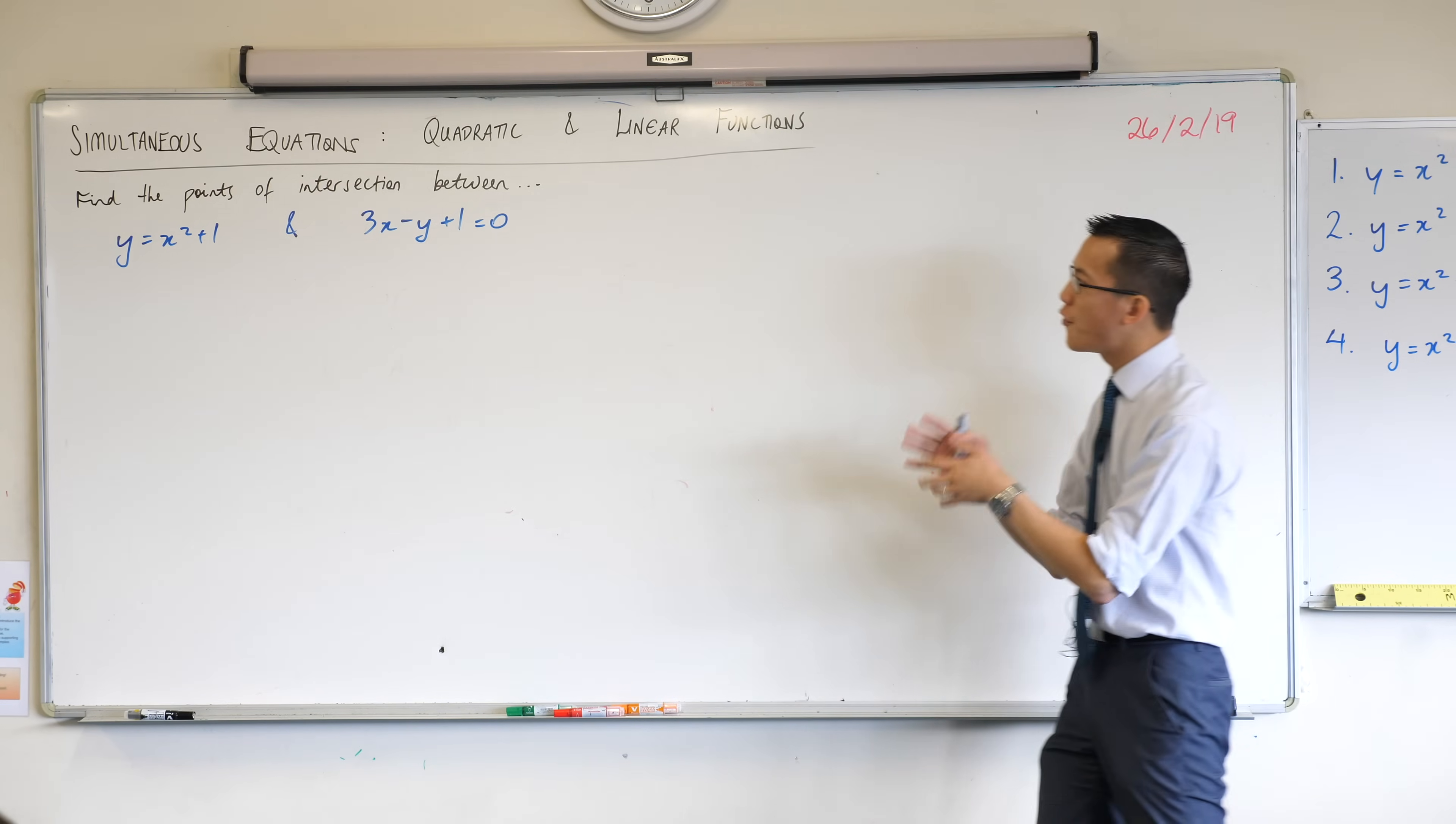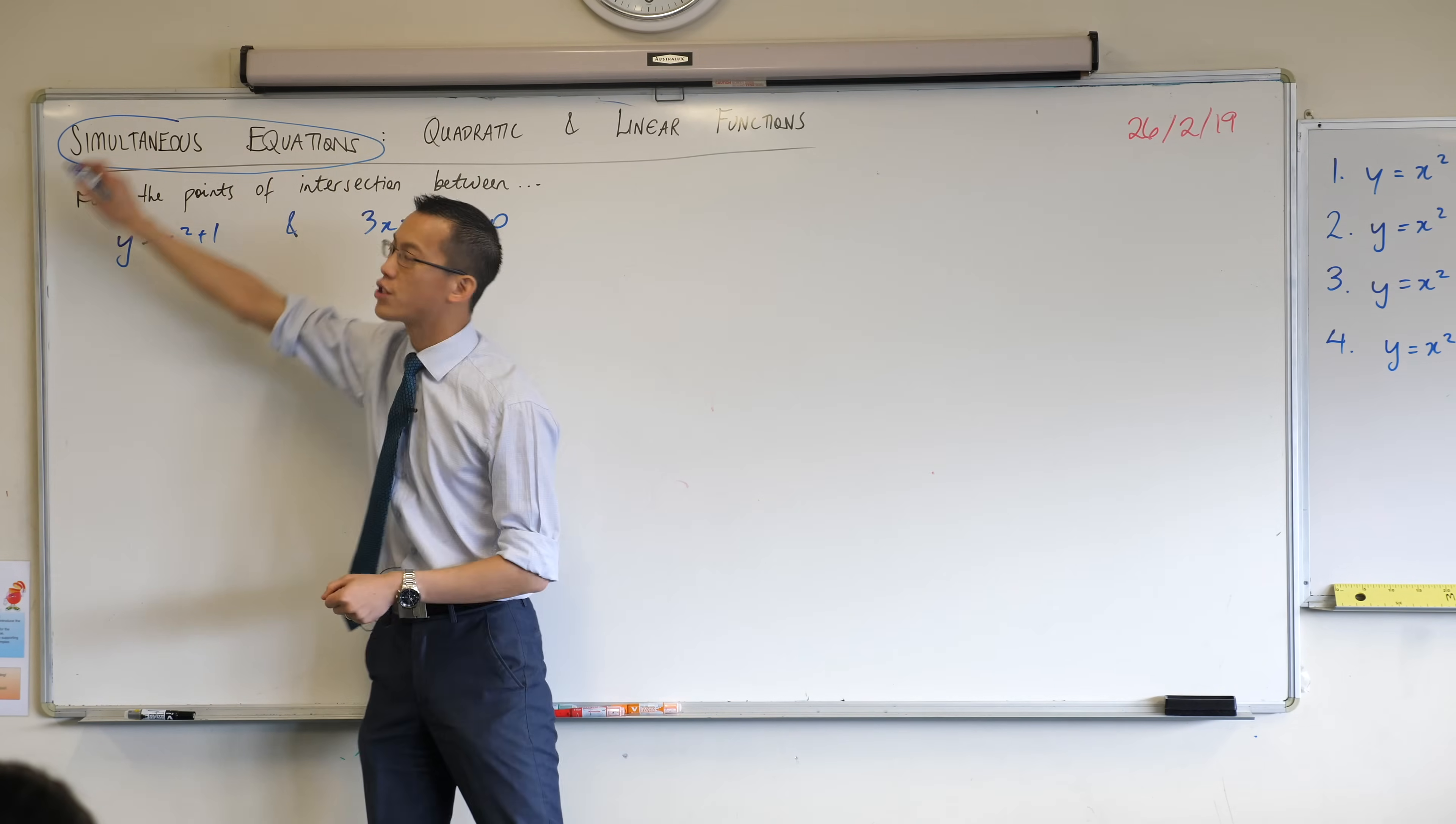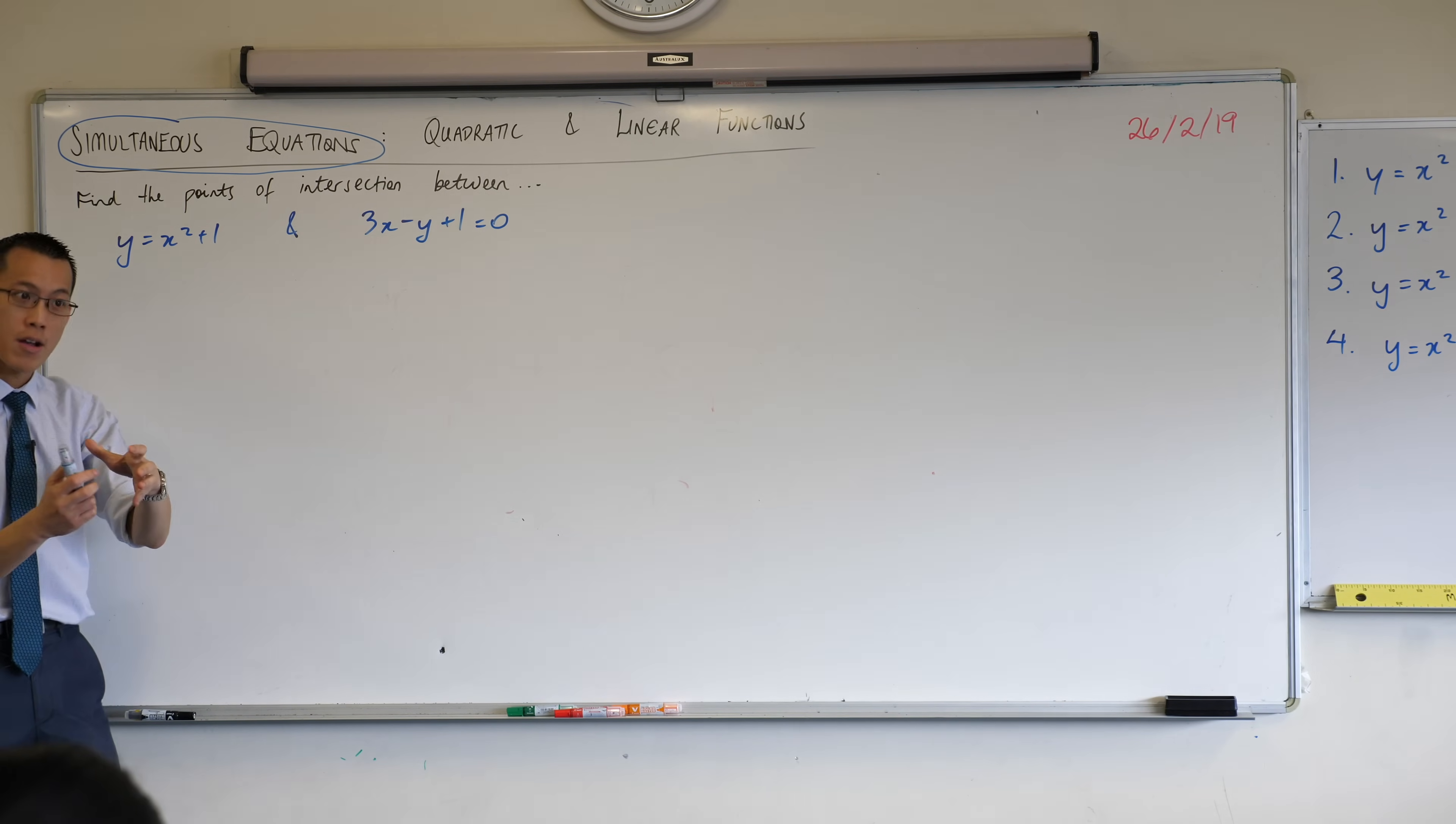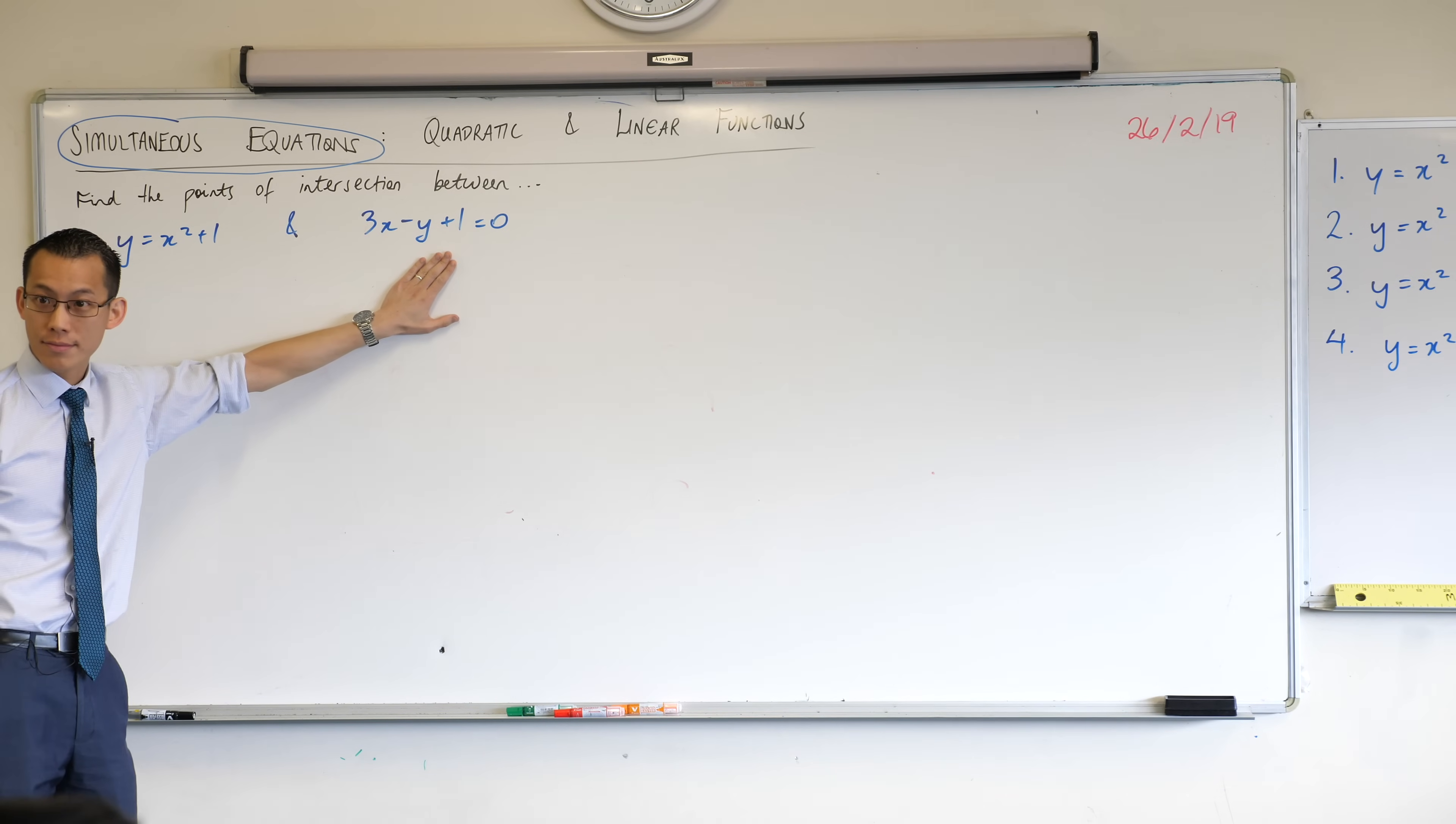So when we're finding the points of intersection between two different equations, between two different graphs represented by these two equations, as the heading suggests, what we're going to do is call on all our knowledge of simultaneous equations and think about solving these two simultaneously. Now the reason why that makes sense is because, to find where these two graphs exist at the same time, what we're looking for is an x and a y that solve this equation, but they also simultaneously solve this equation.